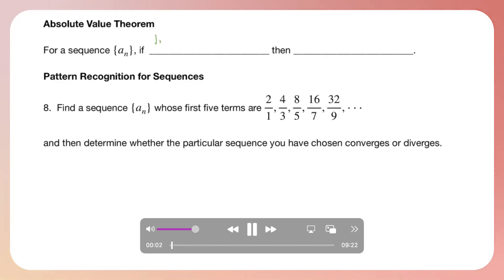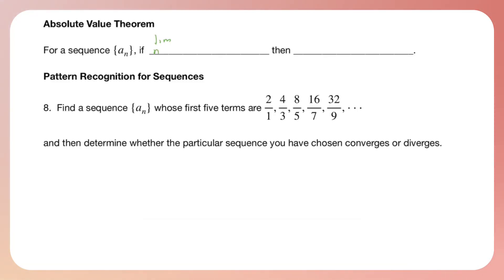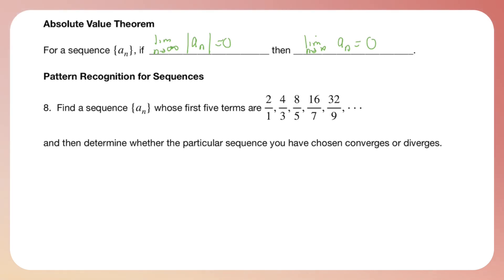There'll be a number of times we'll have to find the absolute value of a sequence. So if we have a sequence a sub n, we need to find the limit as n goes to infinity of the absolute value of a sub n. If that is equal to zero — the absolute value of the sequence limit is zero — then we know that the limit of the sequence a sub n is also equal to zero. That's called the absolute value theorem.